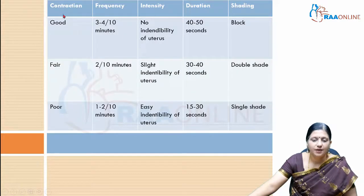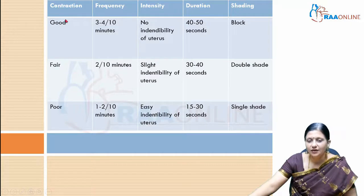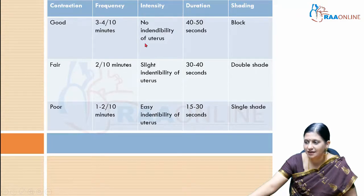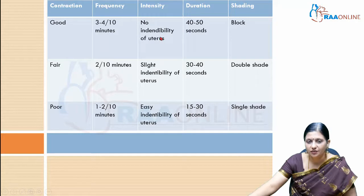Contractions can be defined as good, fair, or poor. Good uterine contractions occur 3 to 4 times every 10 minutes, and at the acme of the contraction you cannot indent your finger into the uterine fundus. By the finger dip method, there should be no indenting of the uterus at the peak of the contraction.